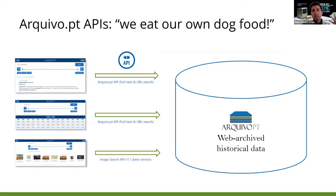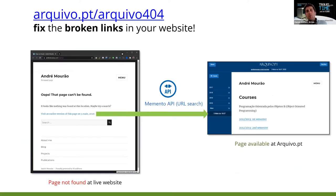Regarding these APIs, we eat our own dog food — everything you use on Archivo.pt is based on our APIs. That's why it's so important that if you have any problem or suggestion you get in touch, because we like to improve our APIs. Another API being applied is the Memento API, based on the Memento protocol. We developed a simple script that anyone can insert in their page-not-found error page.